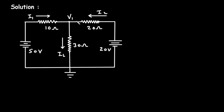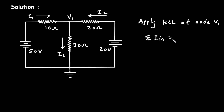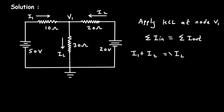We will apply KCL at node V1. According to Kirchhoff's current law — KCL stands for Kirchhoff's current law — the summation of all the currents entering a node is equal to the summation of all the currents leaving the node. Here we can see there are two entering currents: I1 and I2 are both entering at this node. So we write I1 plus I2 equals the leaving current IL, which is leaving from that node.